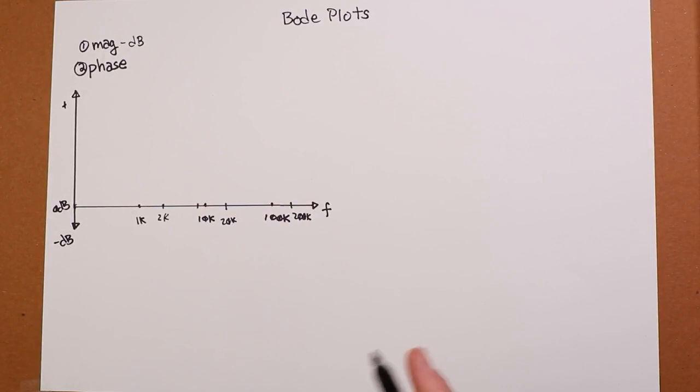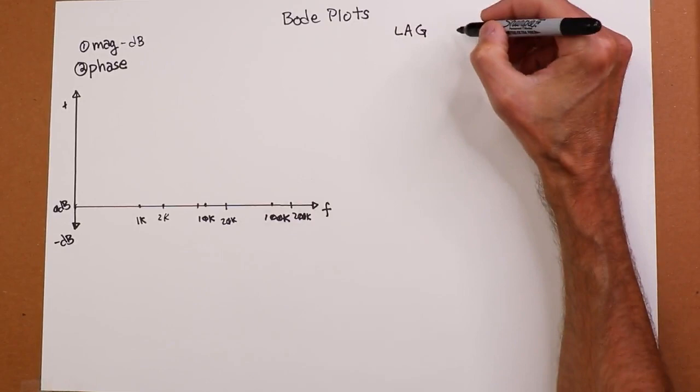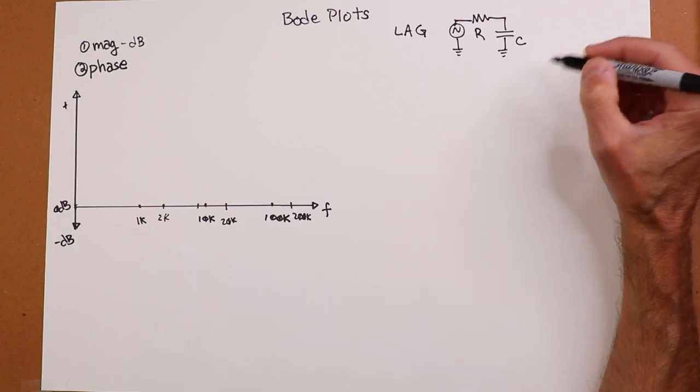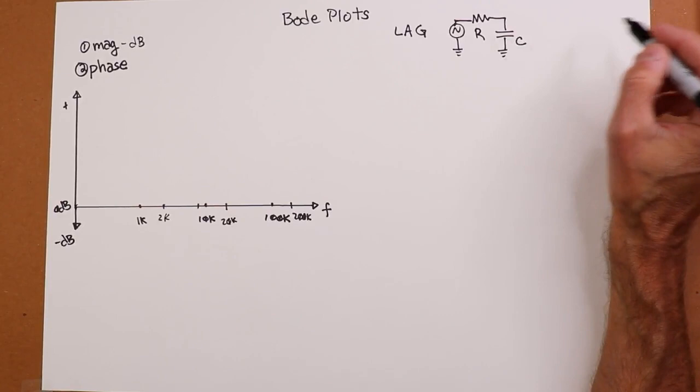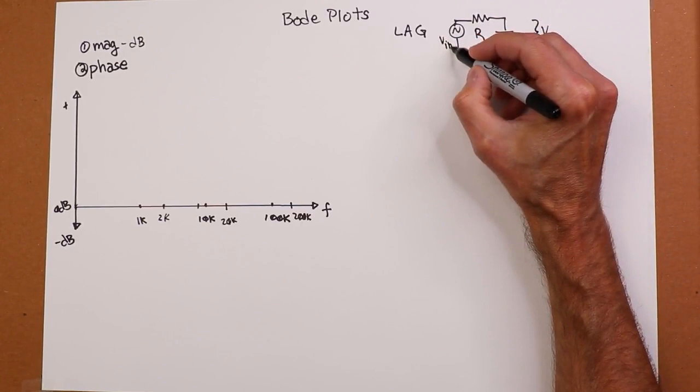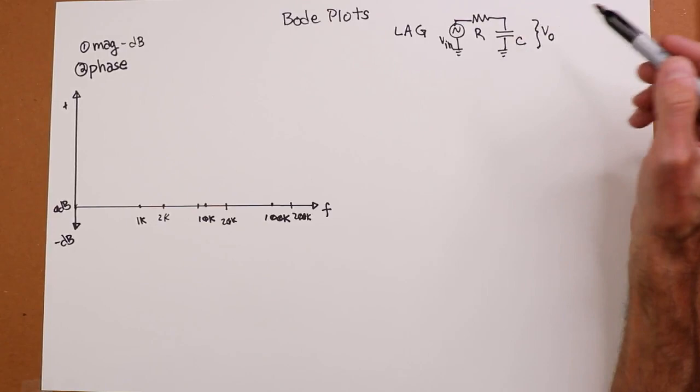Let's start by looking at the two most simple things that we have: lag networks and lead networks. So I'm going to start off with a little lag network. A lag network is nothing more, in the simplest case, as a resistor and a capacitor. Now as we go up in frequency, x sub c gets smaller and smaller. x sub c is 1 over 2 pi fc, so it's inversely proportional to frequency. You can think of this as a little frequency-dependent voltage divider.